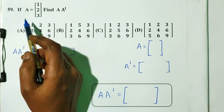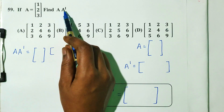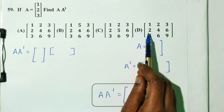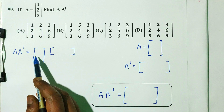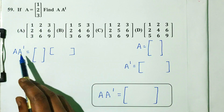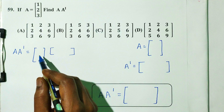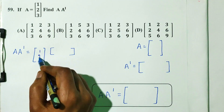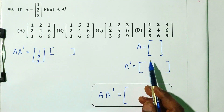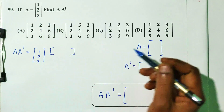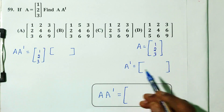Question number 59. If A is equal to the column matrix: 1, 2, 3, find A times A-dash (A transpose). So A-dash (A transpose) means we write the row as a column: A-dash equals: 1, 2, 3 written as a row matrix.